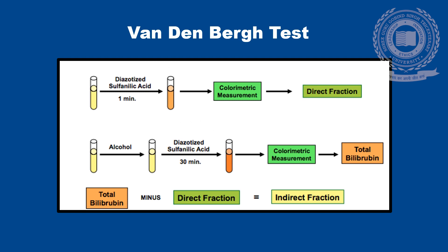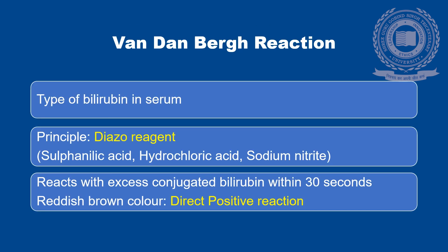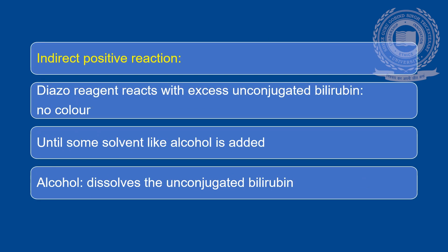Now let us discuss the van den Bergh test. In this test, one can determine the type of bilirubin in serum. The diazo reagent is used, which comprises sulphanilic acid, hydrochloric acid and sodium nitrite. This reagent reacts with excess of conjugated bilirubin within 30 seconds, imparting a reddish-brown colour — this is called the direct positive reaction. In the indirect positive reaction, the diazo reagent reacts with excess of unconjugated bilirubin, providing no colour until a solvent like alcohol is added, where the alcohol acts to dissolve the unconjugated bilirubin.